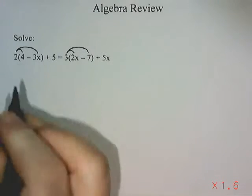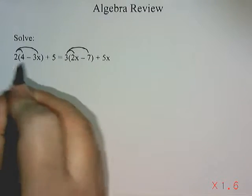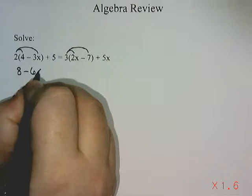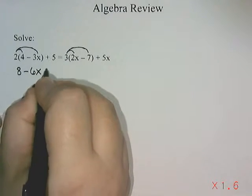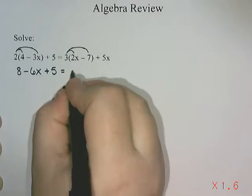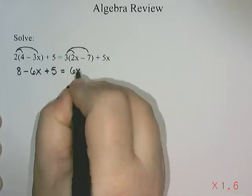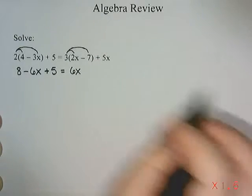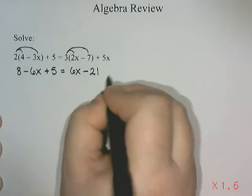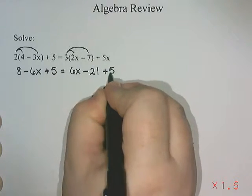So 2 times 4 is 8, and 2 times negative 3x is negative 6x. And then there's this little plus 5 sitting there. And then 3 times 2x is 6x, 3 times negative 7 is negative 21. And then there's that 5x which is not part of the bracket, so it doesn't get multiplied.